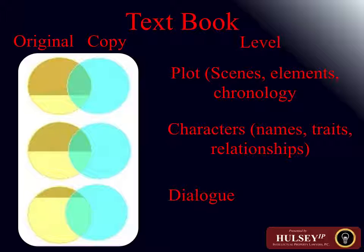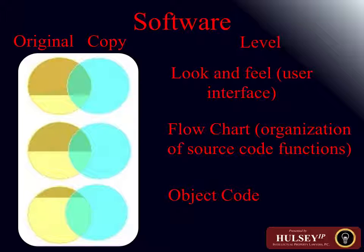Remedies in copyright infringement include statutory damages per the copyright statute, Title 17 — up to $150,000 for a timely registered infringed work for each infringement. On the internet, if there has been timely registration and you can show infringement, for every infringement that's taken place — each copy that's been made — you have the ability to show the basis for statutory damages.